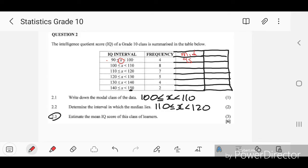Then you say 110 plus 120 divided by 2, so that's 115. Then you say 120 plus 130 divided by 2, that's 125. Then 130 plus 140 divided by 2, that's 135. Then 140 plus 150 divided by 2, that's 145. So we found the midpoint right there.